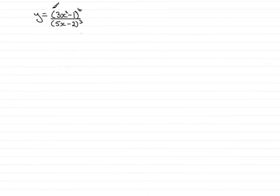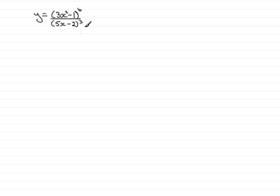In this tutorial, we're going to differentiate the equation y equals (3x squared minus 1) all to the power of 4, divided by (5x minus 2) all cubed. This is a typical example where we have two functions of x being divided by one another, which involves using the quotient rule.